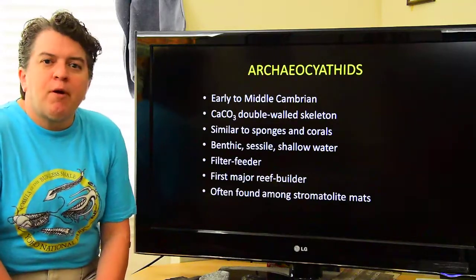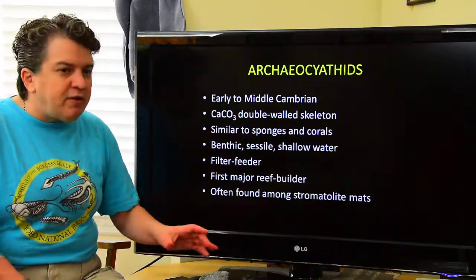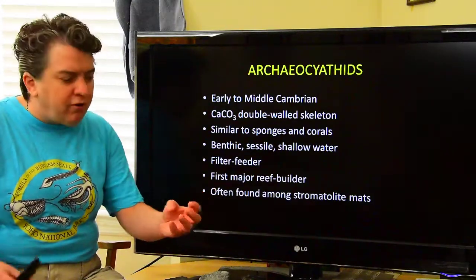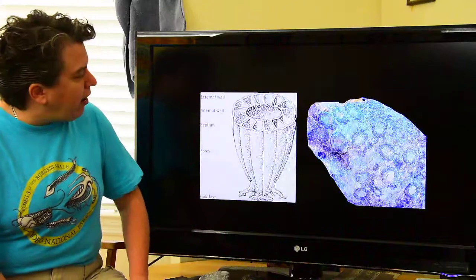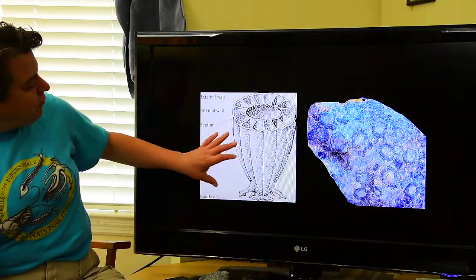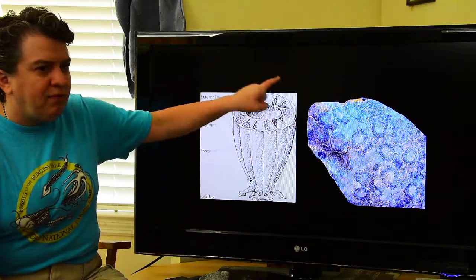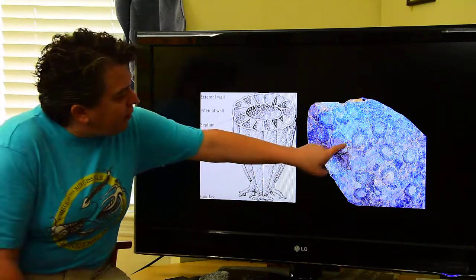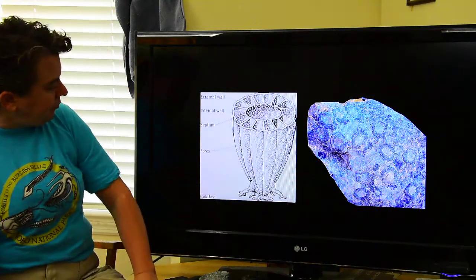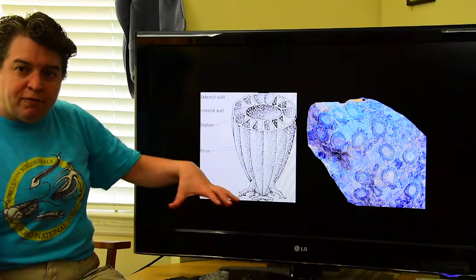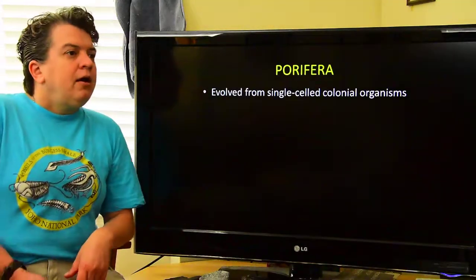Oftentimes, you would have mats of cyanobacteria — those stromatolites — with archaeocyathids interspersed among them, growing up. When we look at their structure, we have an inner wall and an outer wall. At the bottom of these, they have a little holdfast that would basically hold them onto the seafloor.